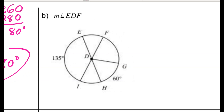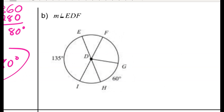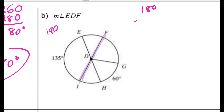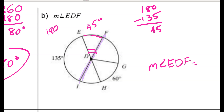For problem B, I have lots of central angles and I want angle EDF. Arc EI is 135 degrees. I also notice IF goes through the center, so it must be a diameter — meaning arc I to F is 180 degrees. Subtracting what I already have, arc EF is 45 degrees. The central angle equals the arc it intercepts, so the measure of angle EDF is 45 degrees.